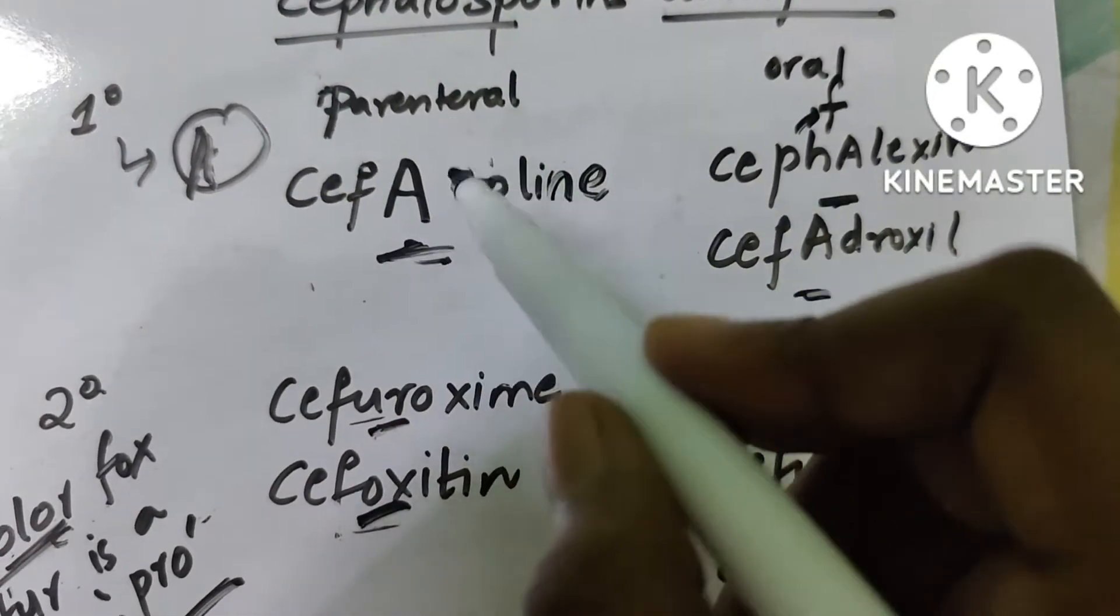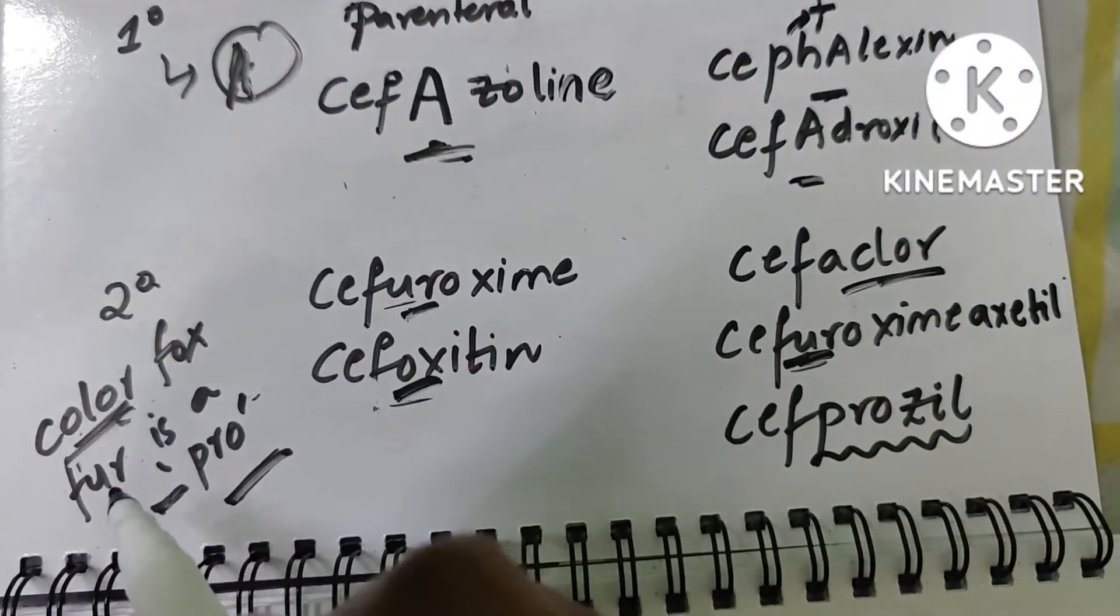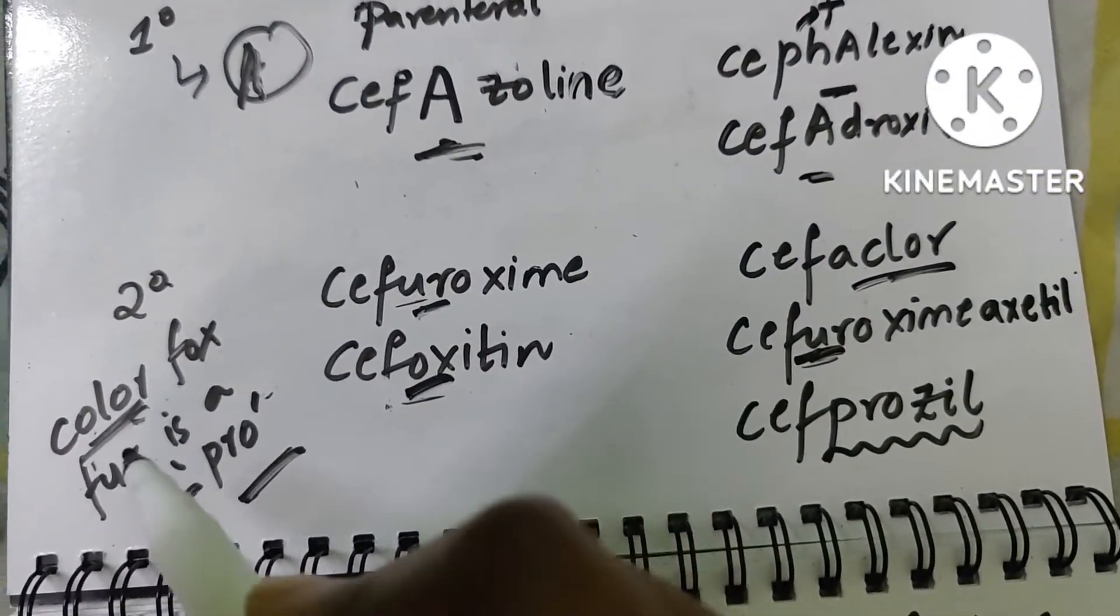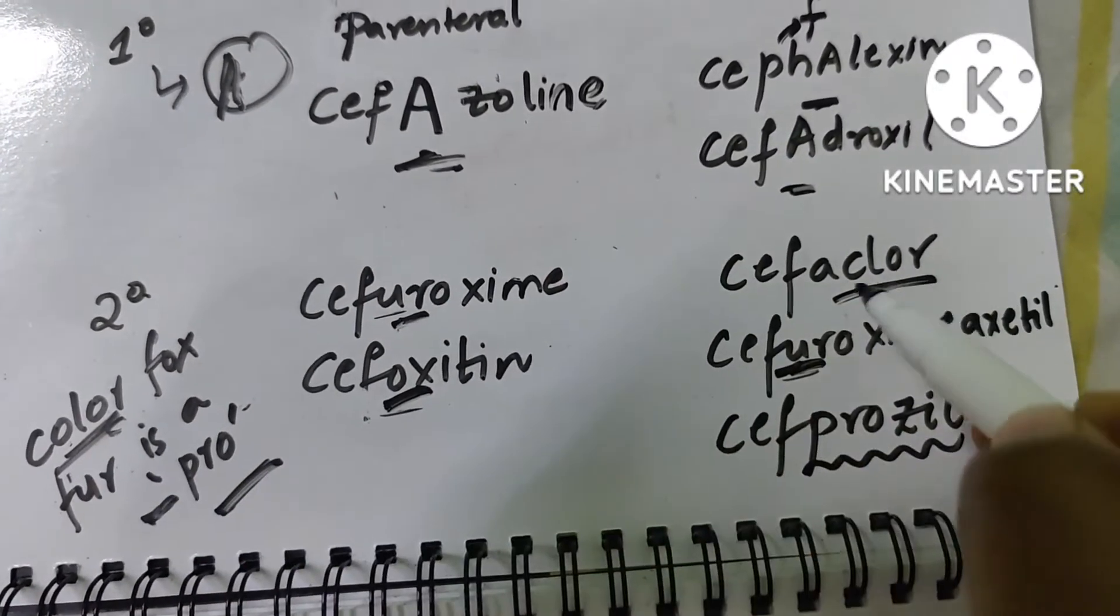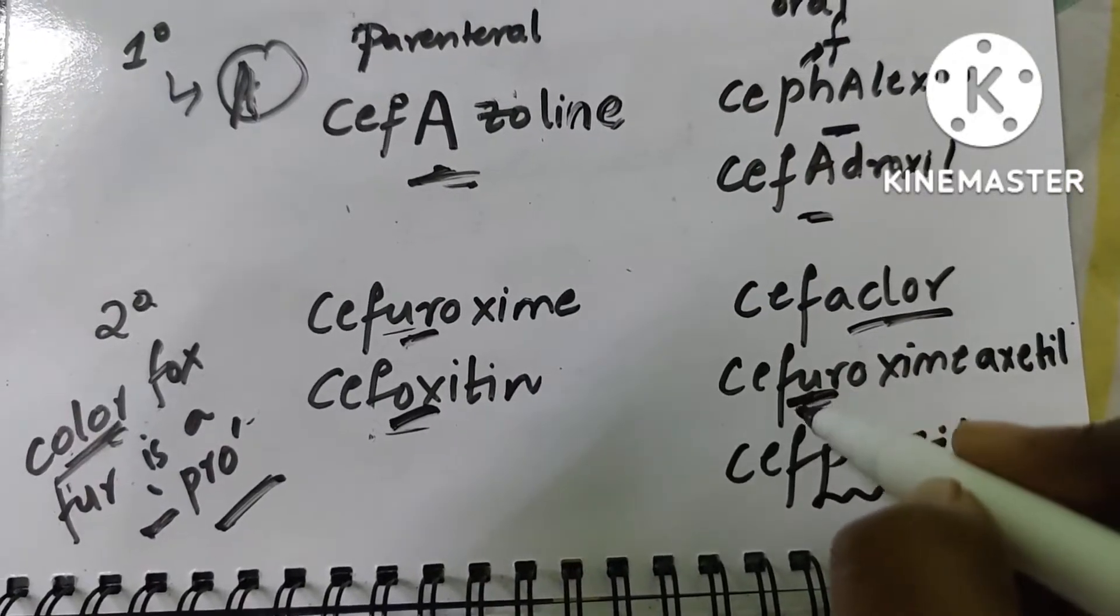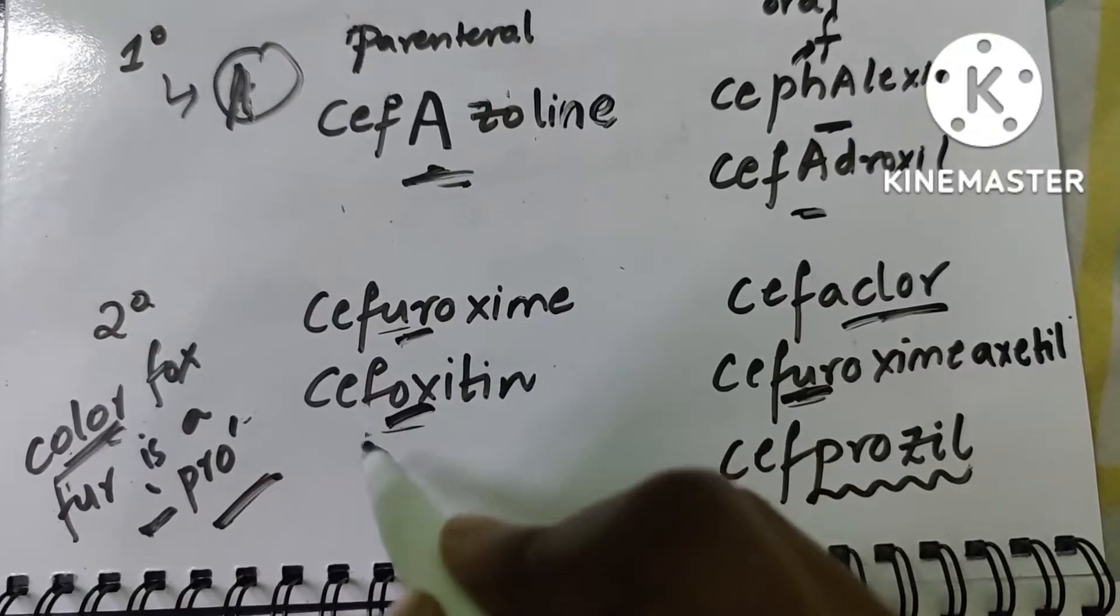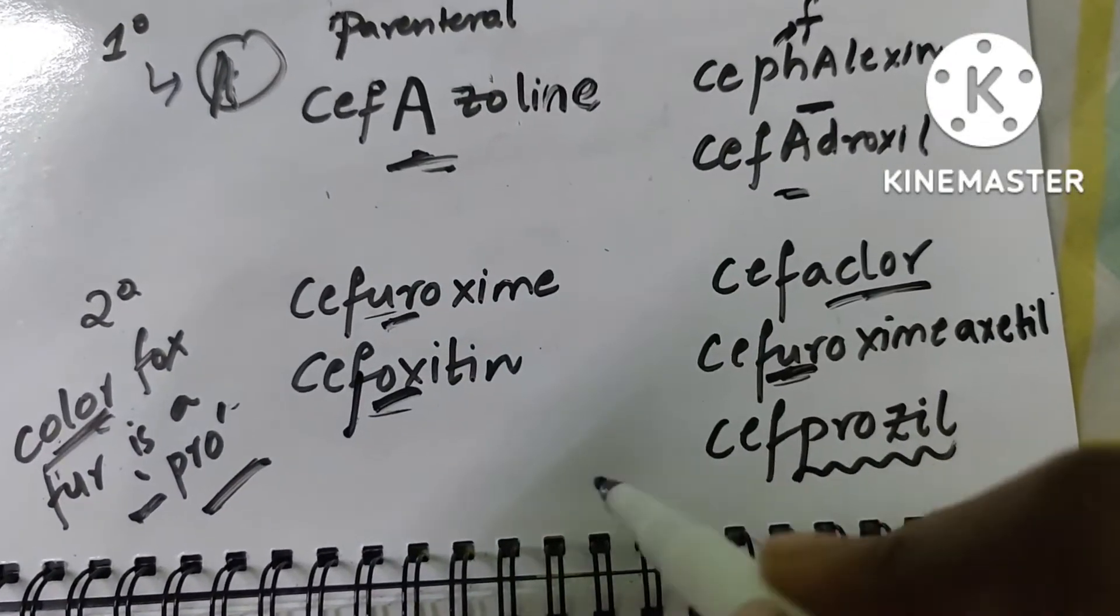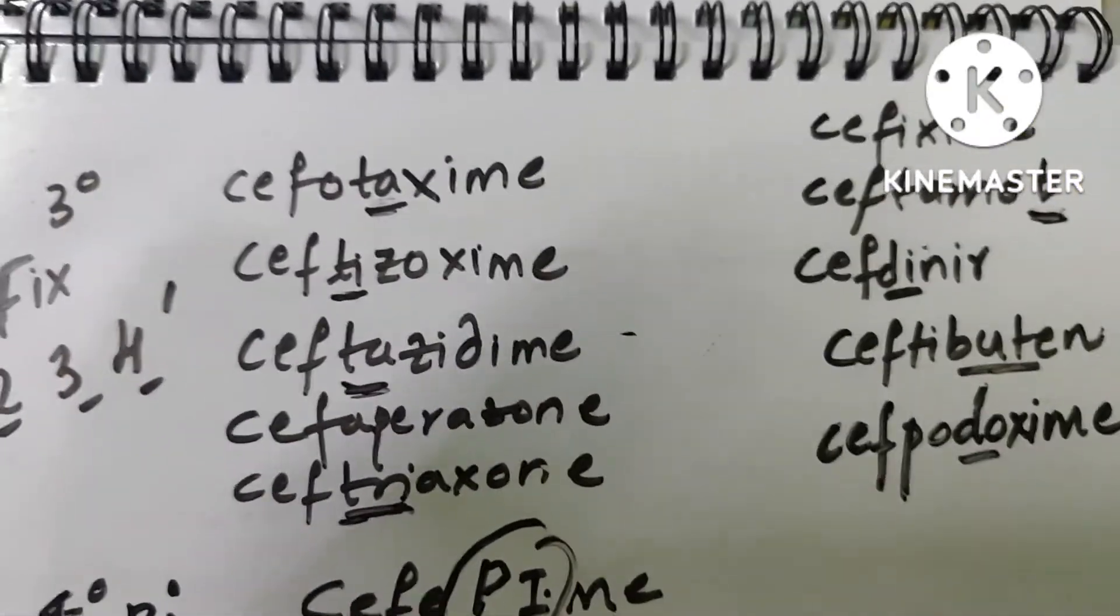Coming to the second generation, the mnemonic is: there is a fox, you colored it and it becomes a pro. So color the fox fur, it becomes a pro. Color is cefaclor, fur is cefuroxime acetil and cefuroxime, fox is cefaclor, and it becomes a pro - cefprozil. This is the second generation.